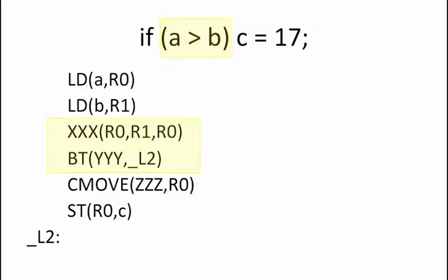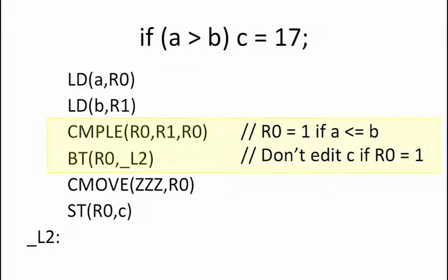So, if we make xxx equal to compare less than or equal of R0, which equals A, and R1, which equals B, then the results stored into R0 will be 1 if A is less than or equal to B. We then set yyy to R0 to ensure that we take the branch when A is less than or equal to B and we make the assignment to C when A is greater than B.